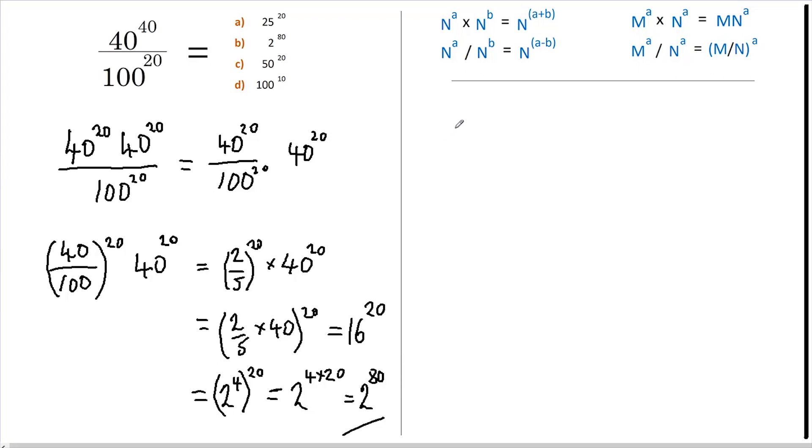The second approach would have been to make the bases the same. So we could have said 40 to the 40 divided by, well let's change 100 into 40 times 2 and a half, or 5 over 2, and these are both to the power of 20. So we've just used this rule in reverse.